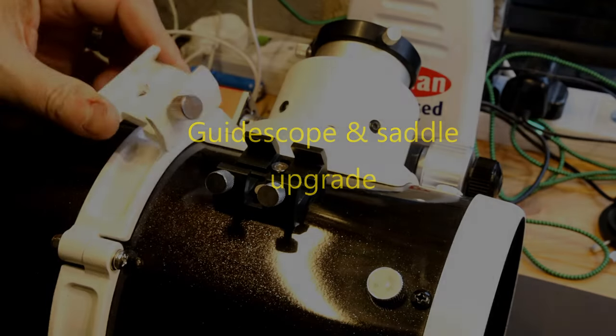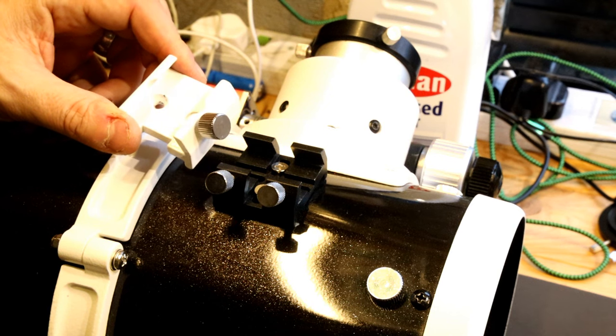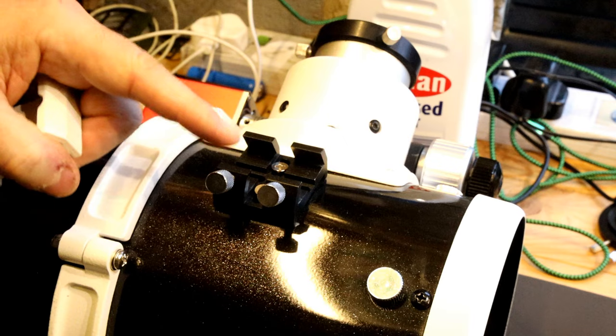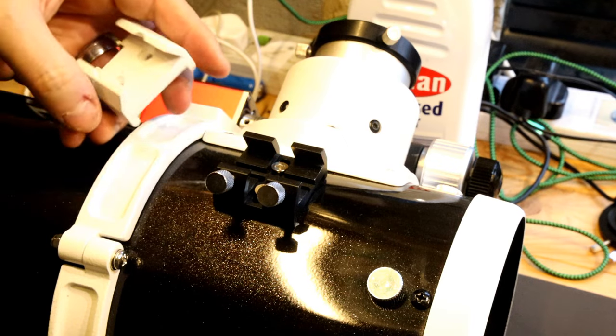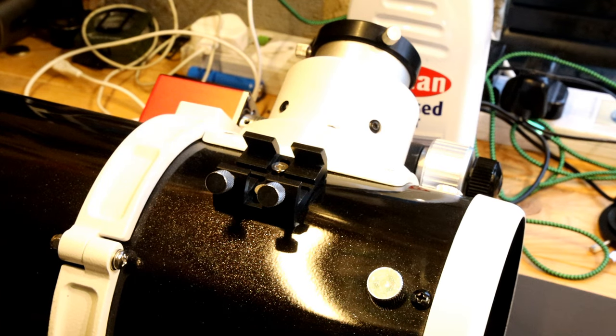The Skywatcher comes with a saddle for a finder scope. I use this mainly for astrophotography, so I changed the saddle for one with two screws. These can be sourced off of eBay or Amazon.